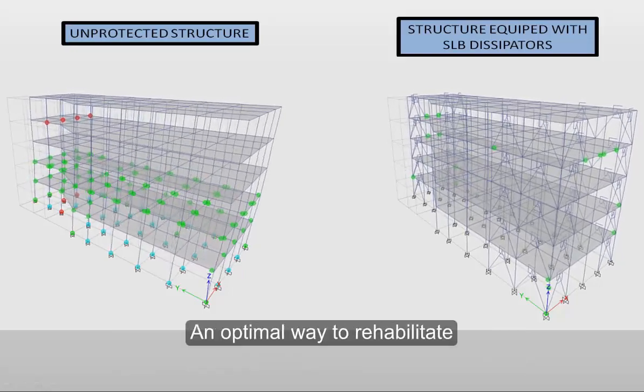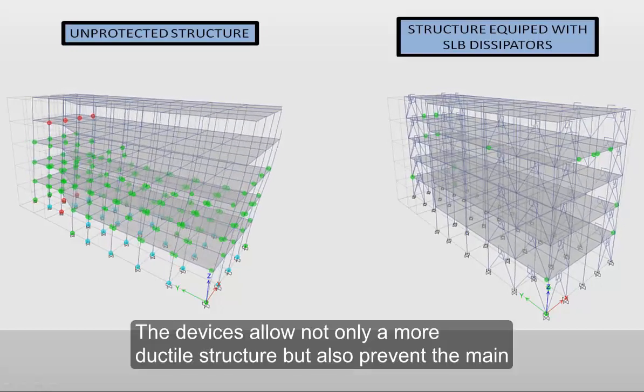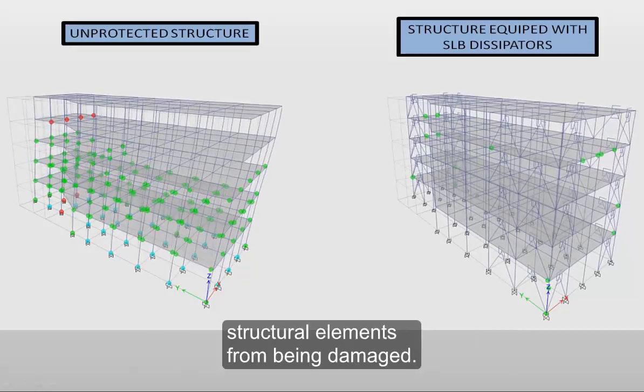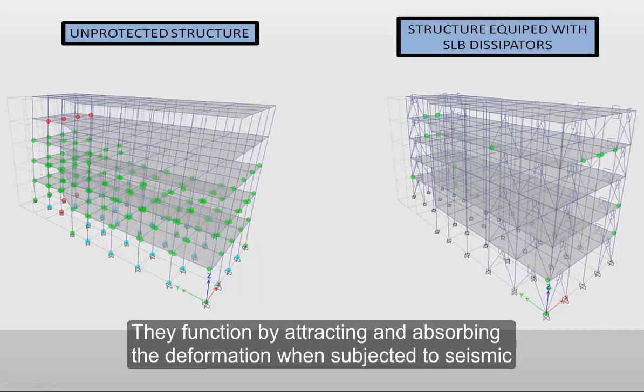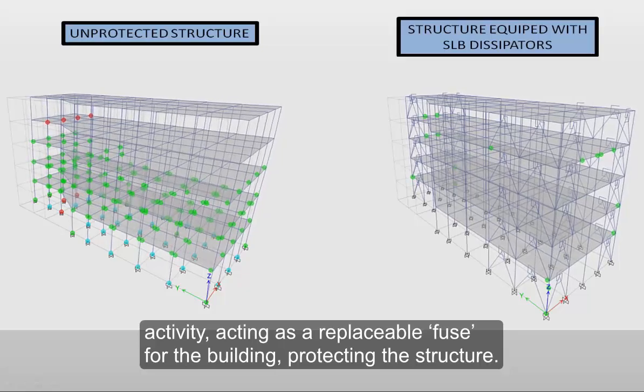An optimal way to rehabilitate or protect new structures is using seismic dissipators. The devices allow not only a more ductile structure but also prevent the main structural elements from being damaged. They function by attracting and absorbing the deformation when subjected to seismic activity, acting as a replaceable fuse for the building, protecting the structure.